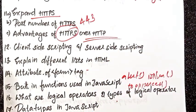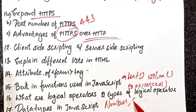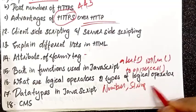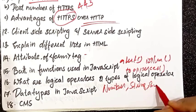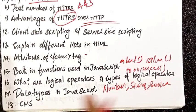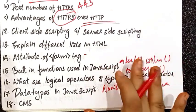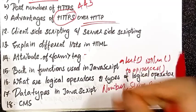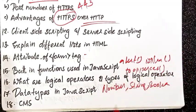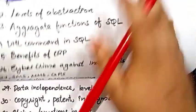I'll explain the data types. Number, string — number and string — three data types. CMS stands for Content Management System. I'll explain the next question.